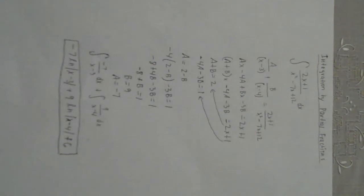Then you cross multiply. a times x minus 4a plus bx minus 3b equals 2x plus 1. a plus b times x minus 4a minus 3b equals 2x plus 1.